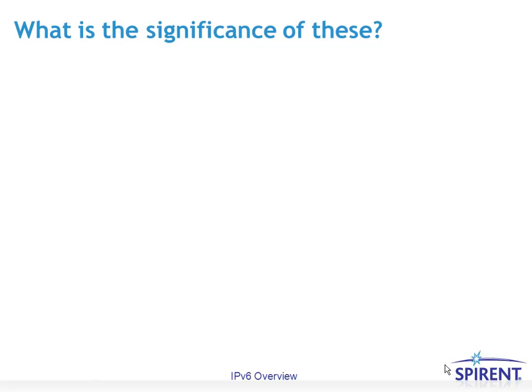So what is the significance of these? I'm going to pull up some bullets, one after another, of things that you should get used to looking at. First of all, hexadecimal 86DD — that is the ether type field for IPv6, just as hexadecimal 0800 is the ether type field for IPv4.